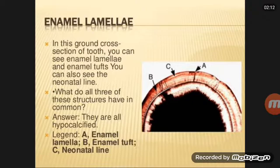Enamel tufts are poorly calcified portions of enamel formed due to an abrupt change in direction of enamel rods moving left or right. They begin at the DEJ and extend into enamel to about one-fifth or one-third of its thickness.